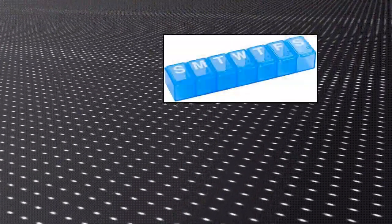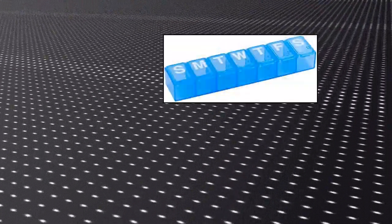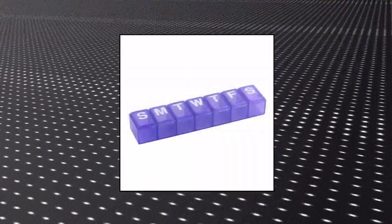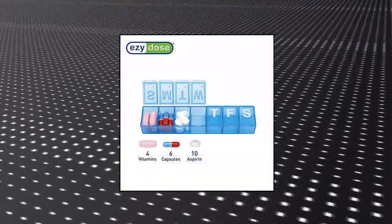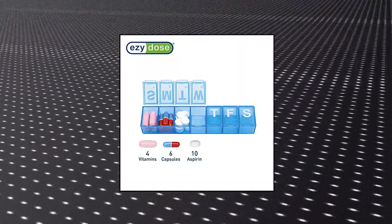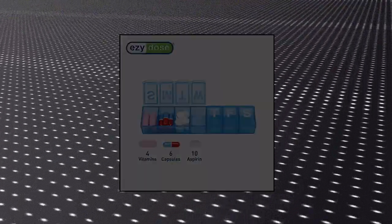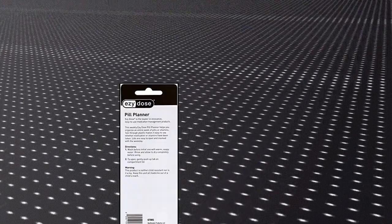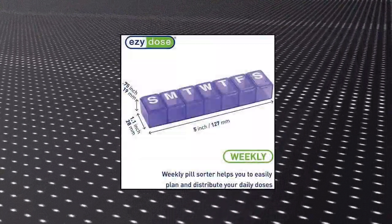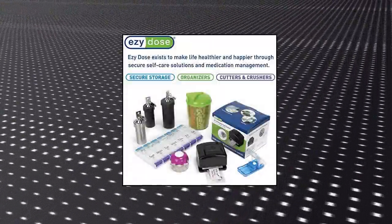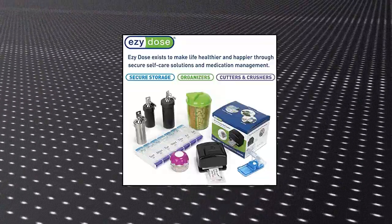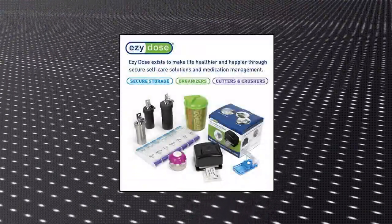Easy dose weekly pill organizer. 7 day pill organizer, weekly pill sorter helps you to easily plan and distribute your daily doses. Keep medication visible and help prevent missed doses. Capacity: each compartment holds 10 aspirin, 6 capsules, 2 vitamins. Built to last, quality design, built to withstand repeated use. Easy dose products make living healthier simply easier, many products endorsed by the Arthritis Foundation.